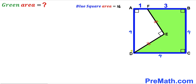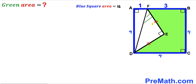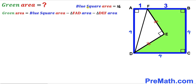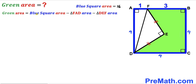Next, I'm going to connect vertex D with point F. As a result we end up with two right triangles: right triangle FAD and right triangle DEF. We can see that the green shaded region area equals the area of the whole blue square minus the area of triangle FAD minus the area of triangle DEF. We already know the blue square area is 16.